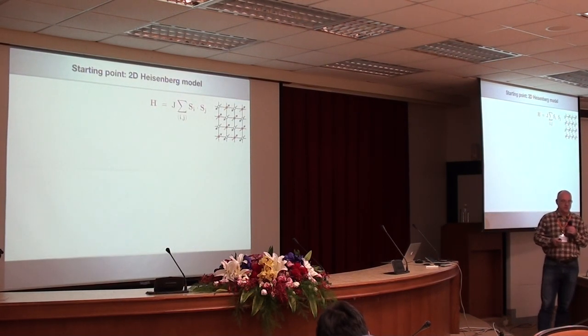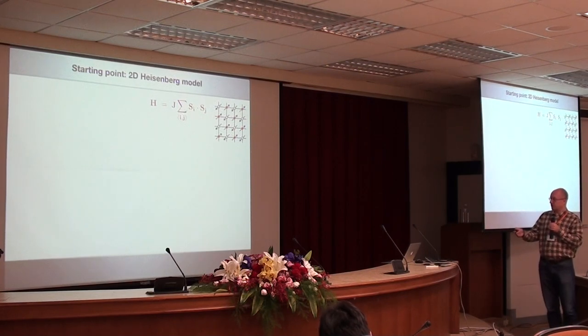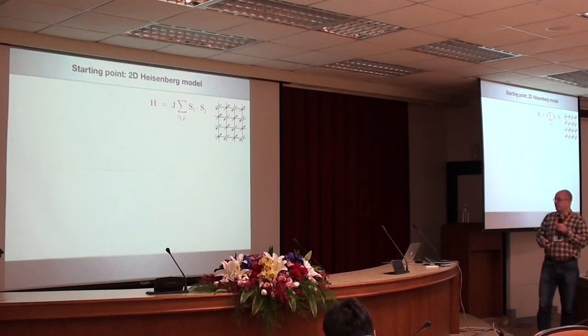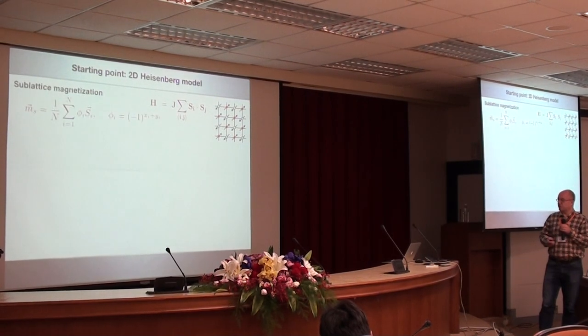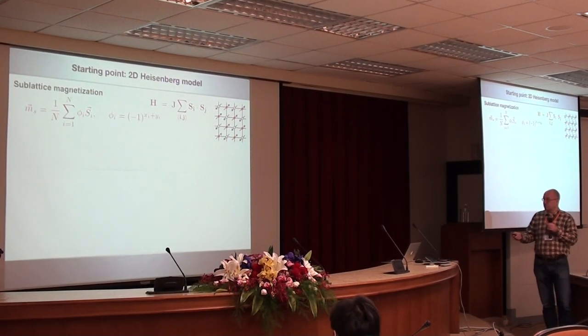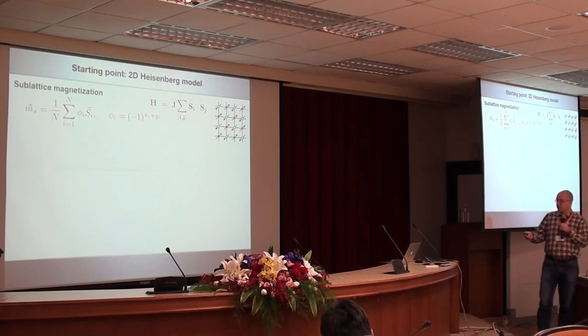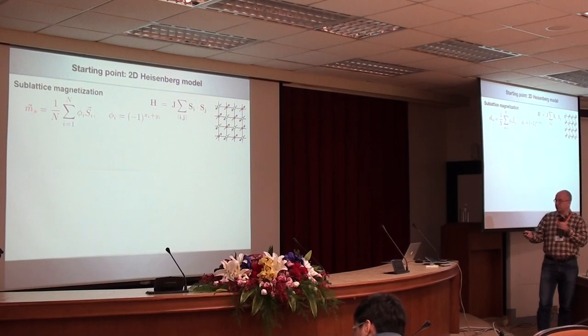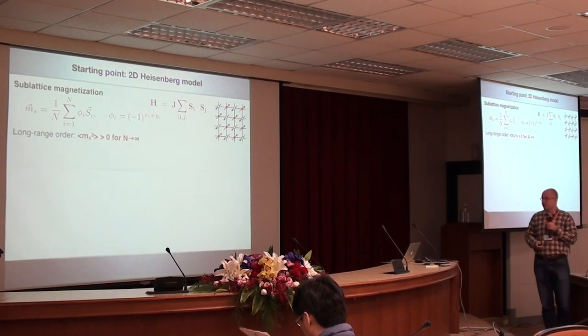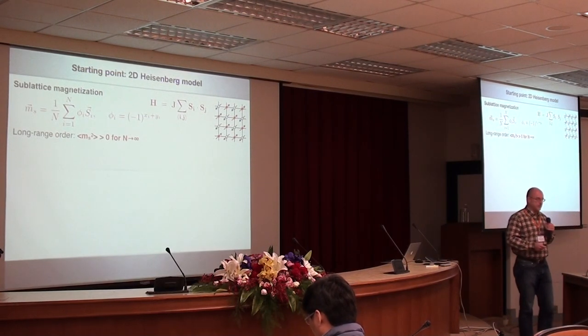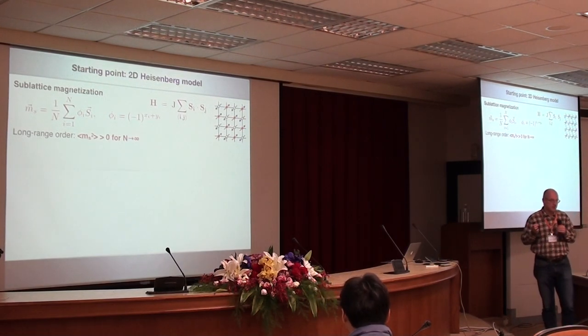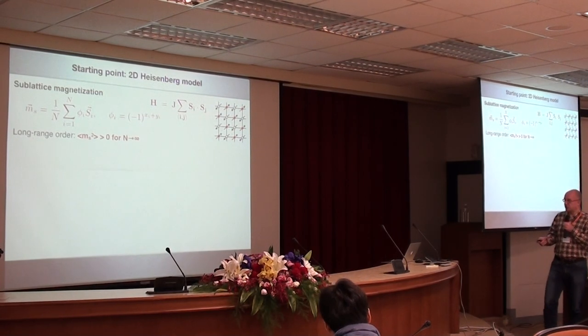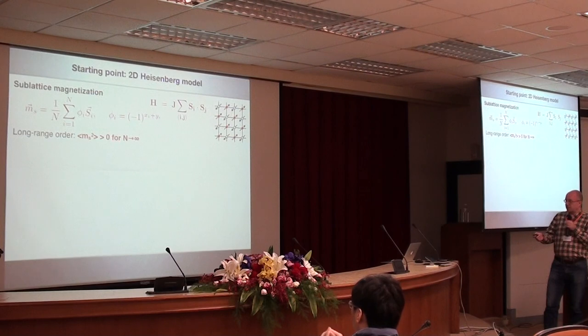So the starting point in what we are doing is the 2D Heisenberg model. I think you all know what it is. We have spin 1/2 spins coupled with these nearest-neighbor interactions. The order parameter of this system, since we have this kind of staggered order, if you write down the magnetization, or we call it the sublattice magnetization or staggered magnetization, it's just summing all the spins with this phase factor here. If you want to answer the question whether or not this system has long-range order at zero temperature.